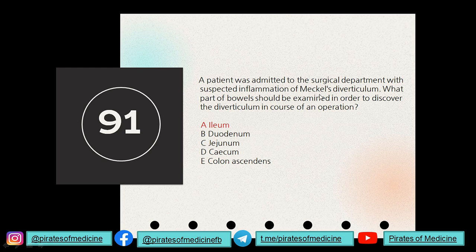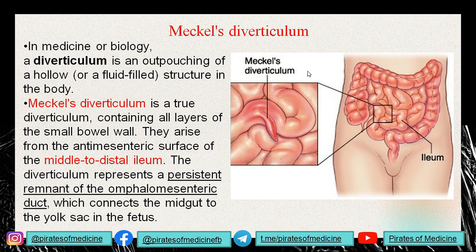Meckel's diverticulum — in medicine, biology, or anatomy a diverticulum is an outpouching, a fluid-filled sac which comes out of a normal structure or viscera of the body. Meckel's diverticulum is a true diverticulum, which means it contains all the layers — mucosa, submucosa, and serosa of the intestinal wall. Meckel's diverticulum arises from the antimesenteric surface of the middle to distal ileum.